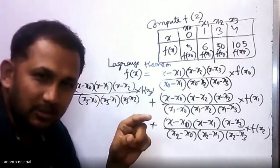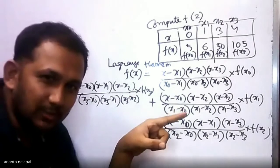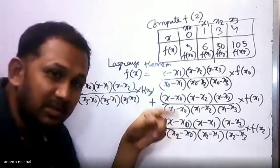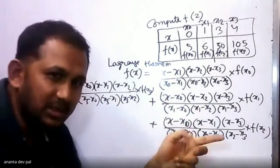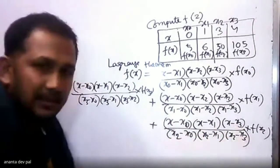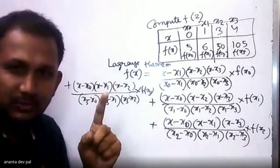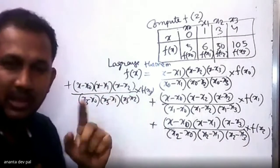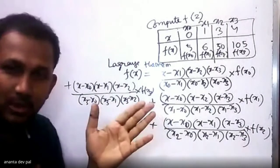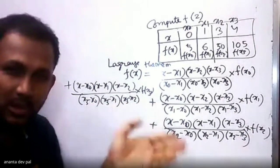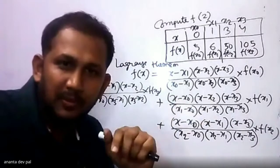Plus again, for the third term, x2 is omitted: (x minus x0)(x minus x1)(x minus x3) divided by (x2 minus x0)(x2 minus x1)(x2 minus x3), multiplied by f(x2). Similarly, for the fourth term, x3 is omitted: (x minus x0)(x minus x1)(x minus x2) divided by (x3 minus x0)(x3 minus x1)(x3 minus x2). Now we know the formula and we have to put in the values to calculate f(x).